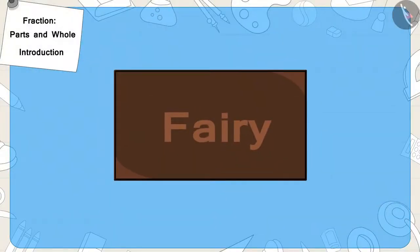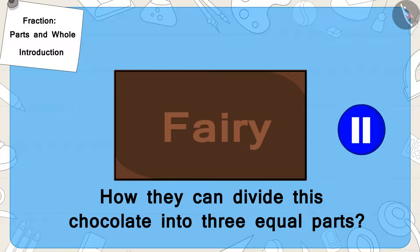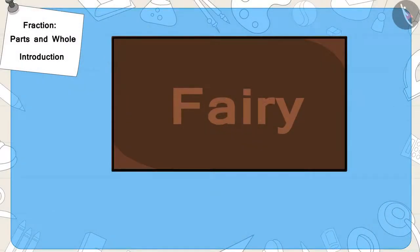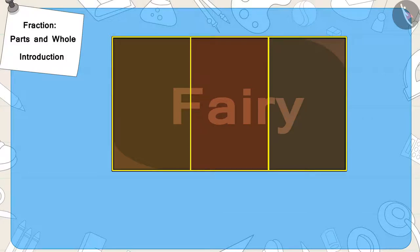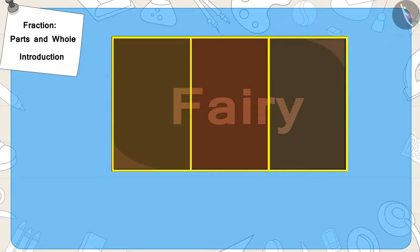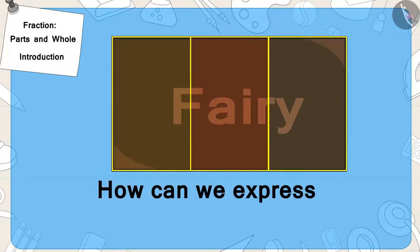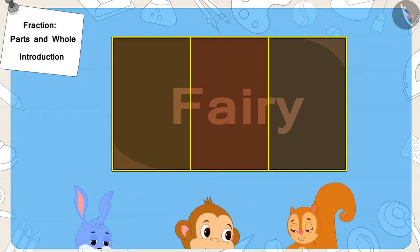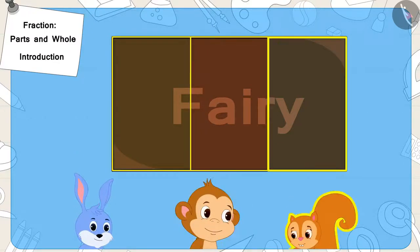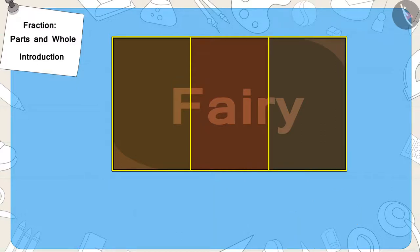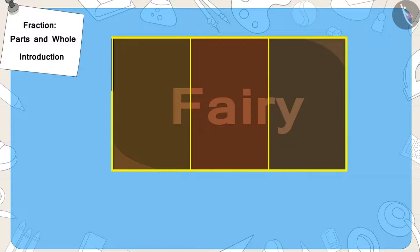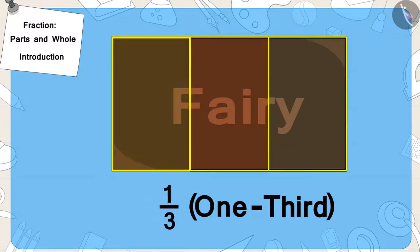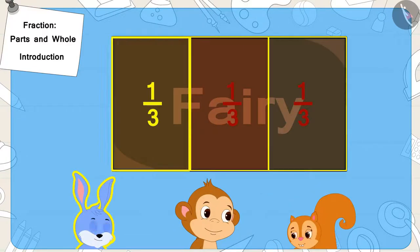Children, can you tell how they can divide this chocolate into three equal parts? If you wish to, you may stop the video and find the answer. Well done, children — you have divided this correctly! Now, can you tell how we can express the part got by each one of the three as a fraction? There are a total of three equal parts of the chocolate, and each one will get one part of it. We can write it as a fraction in this way. We also call this one third of the whole chocolate. In this way, all three will get one third of the chocolate.